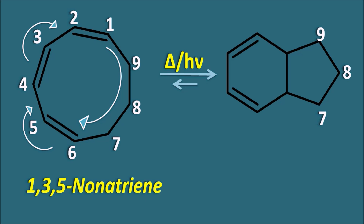When we come to the configuration of the product, the configuration depends on the configuration of the reactant — whether the reactant has double bonds with either E or Z configuration — how many pi bonds are present, and by which source of energy they are activated, whether thermal or photo energy. By all of these factors we can fix the configuration of the product. In our next video we will see how to assess the configuration of the product using simple tricks.